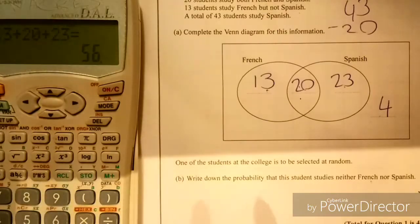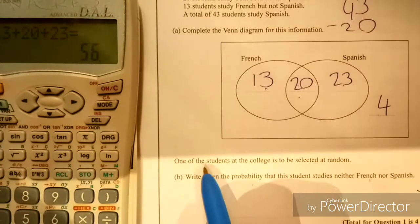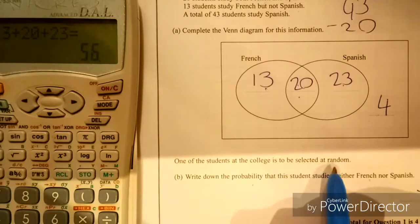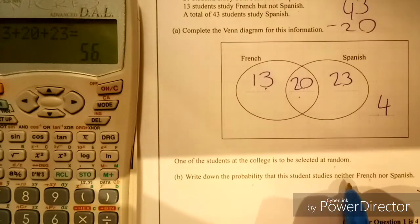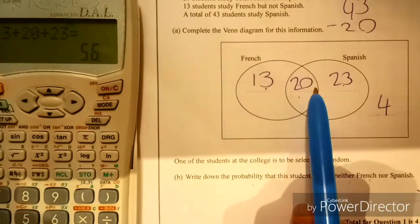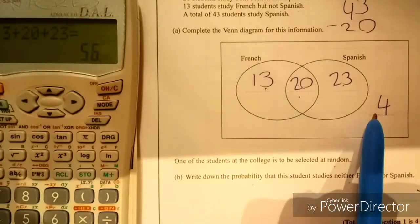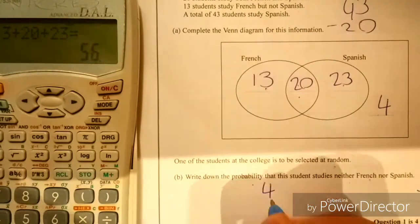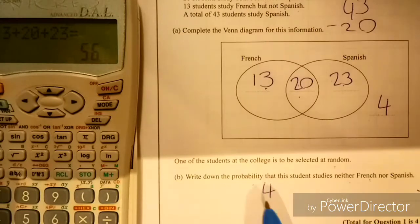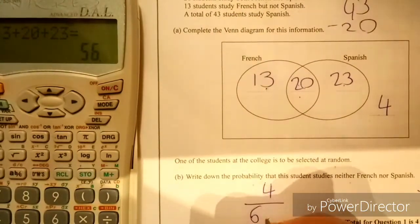The second part of it says write down the probability that one student at the college selected at random will study neither French nor Spanish. So these study French, these study both, these study Spanish. So I need these four people. Need to think how much is out of in total, which would be out of 60.